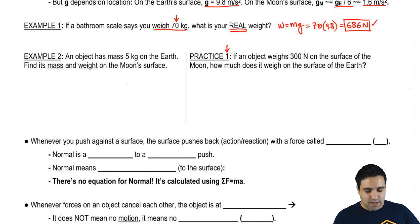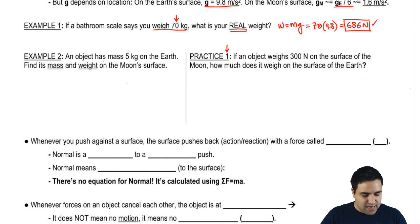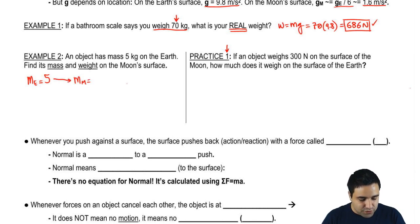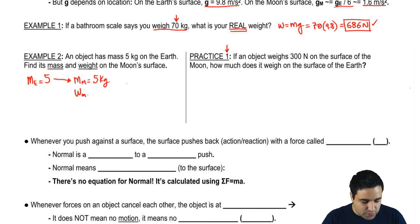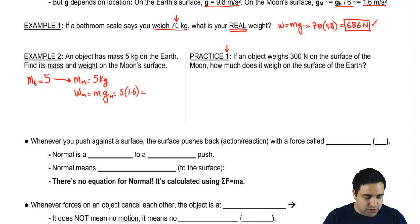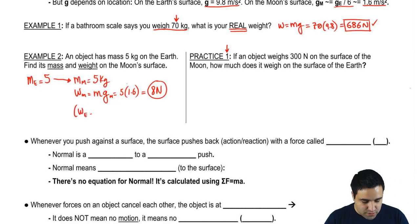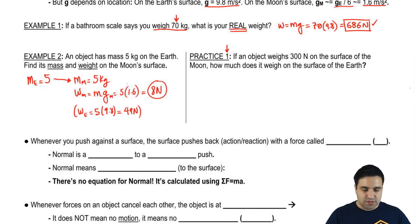An object has a mass of 5 kilograms on the Earth. What is its mass on the Moon, and what is its weight on the Moon? Mass doesn't change if you go to a different planet, so the mass remains 5 kilograms. The weight on the Moon is mass times gravity on the Moon, which is 5 times 1.6, giving 8 newtons. On Earth the weight would have been 5 times 9.8, which is 49 newtons — there's a big difference.